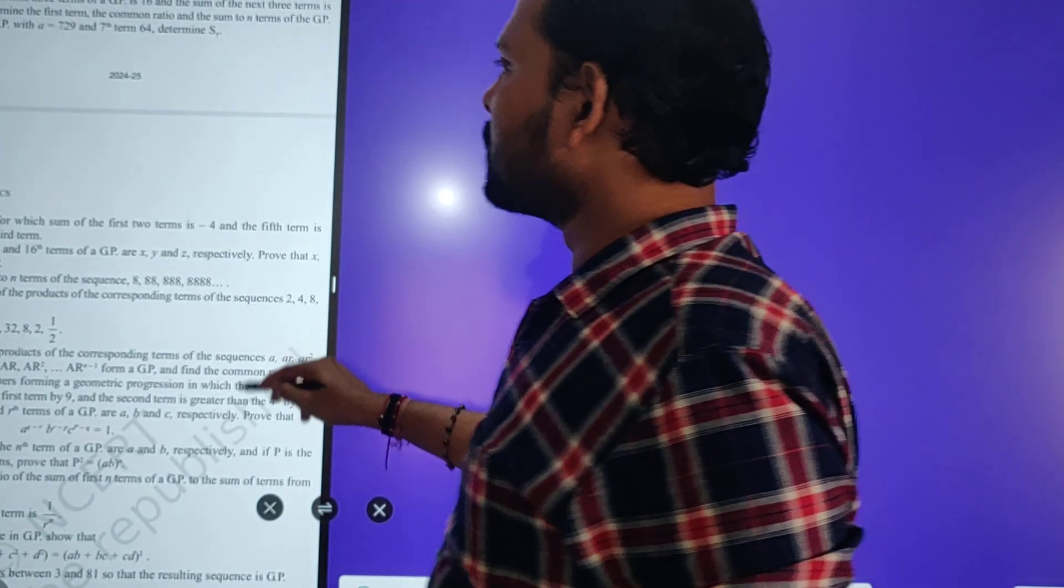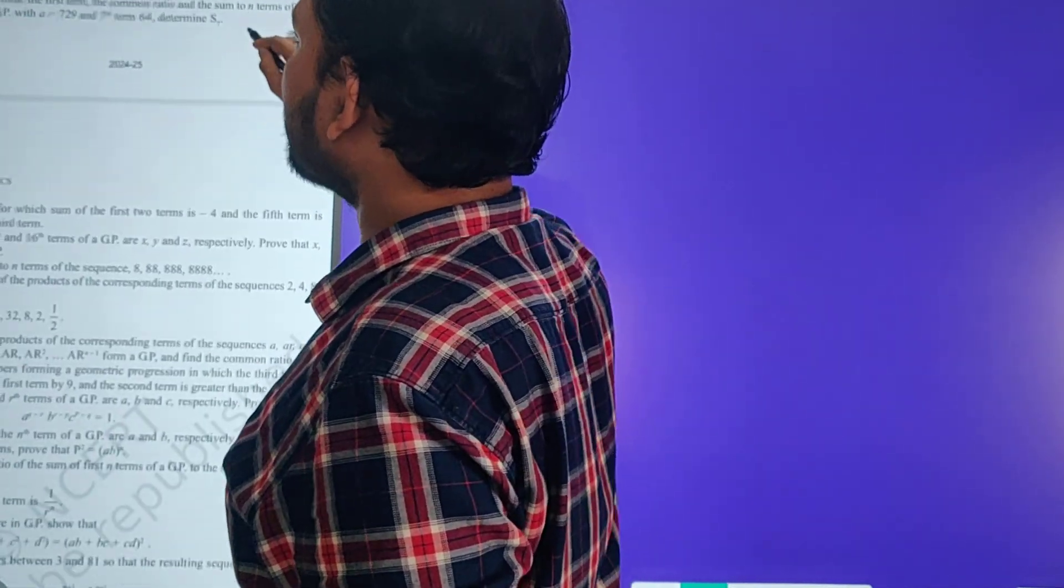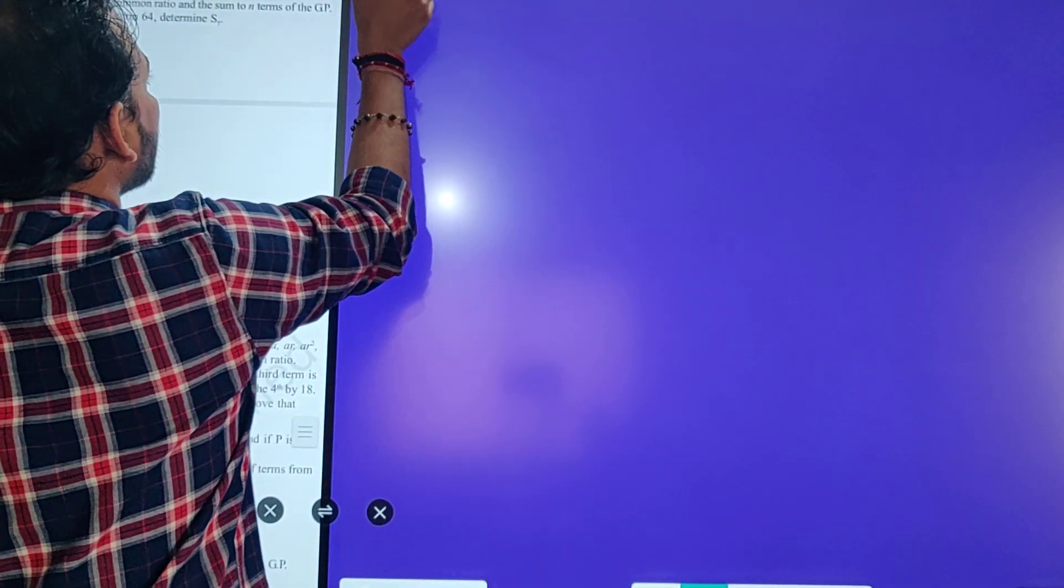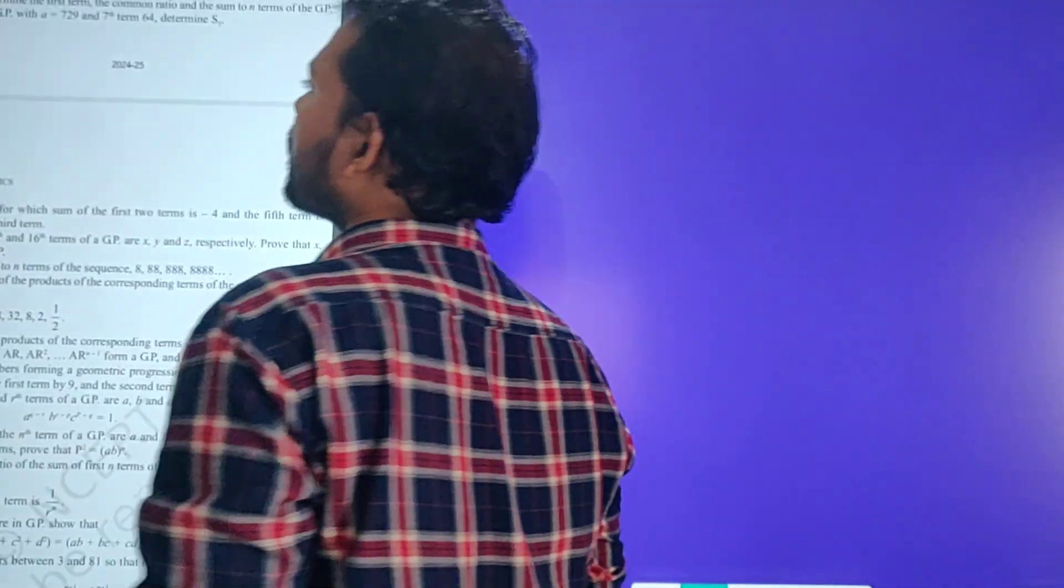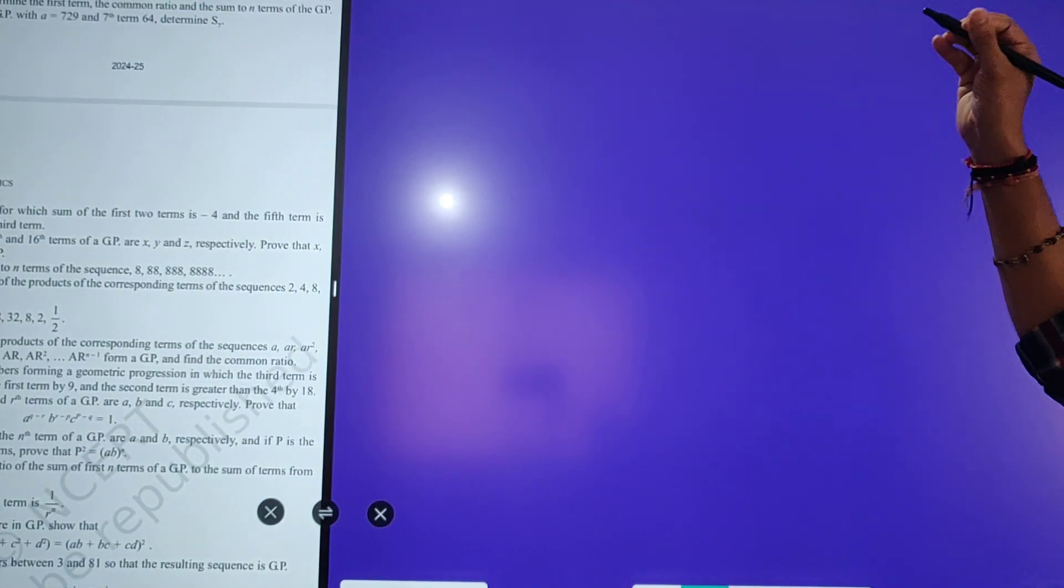So, in our sequence and series exercise 8.2, numerical number 13. What are we saying in numerical number 13? How many terms of GP? This GP is given. What is GP?